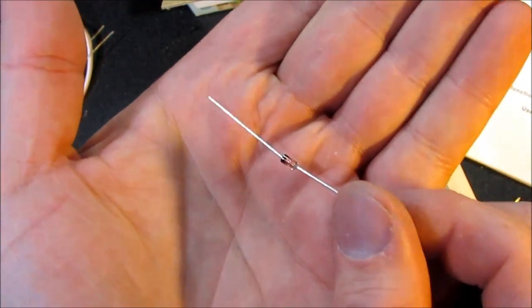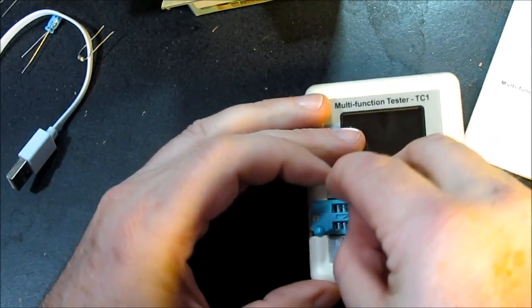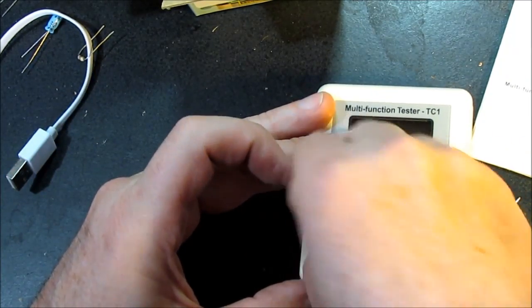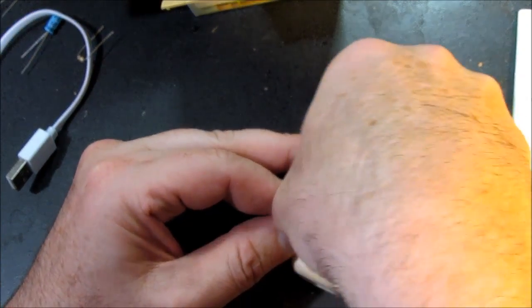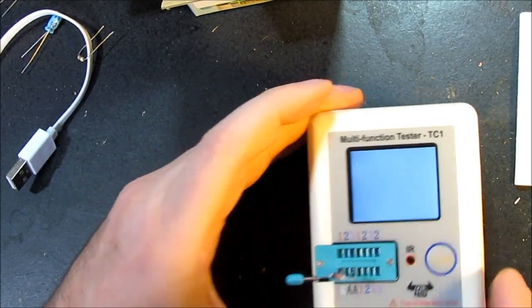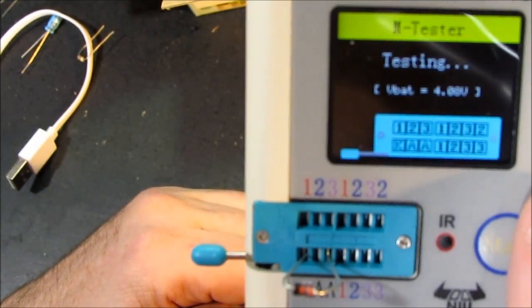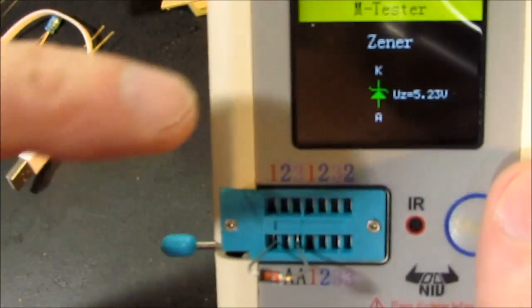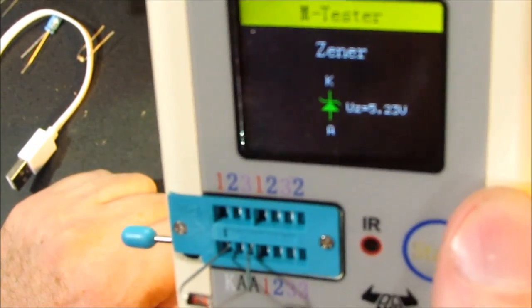We got a tricky one for it now. This is a diode, but it's not just any diode. It is a zener diode. You know, diodes normally conduct in one direction. Well, zener diodes are kind of cool. They conduct in both directions. And it says it's a zener with a 5.23 volt reverse voltage.